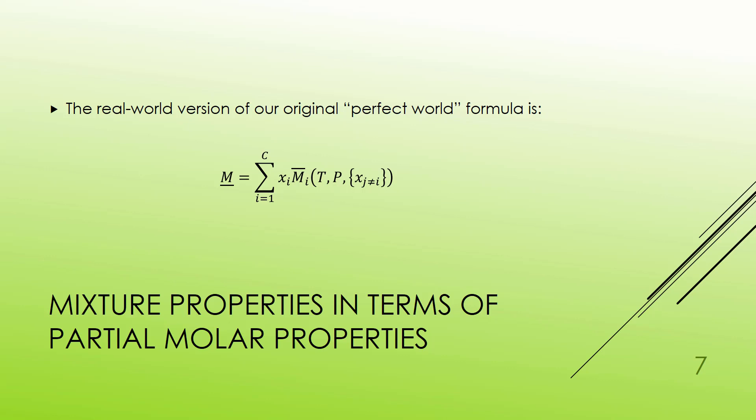So what happens is the real-world version of that equation that I started out with for a perfect world. Instead of saying that the specific M is the sum of Xi times the pure Mi's, instead what really happens, the specific M for the mixture is going to be the sum of the mole fractions times these partial molar properties for each of the species.